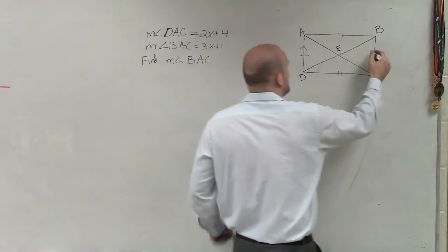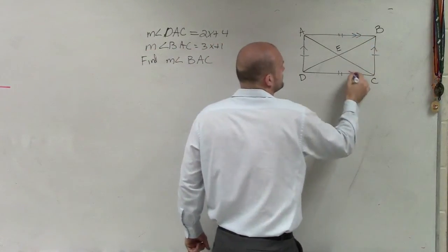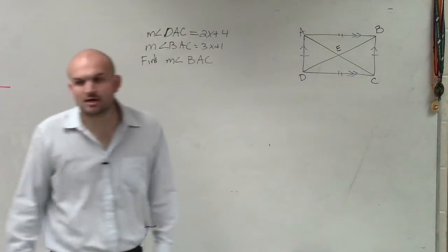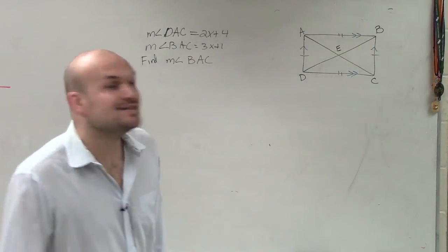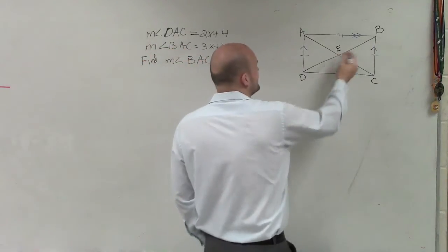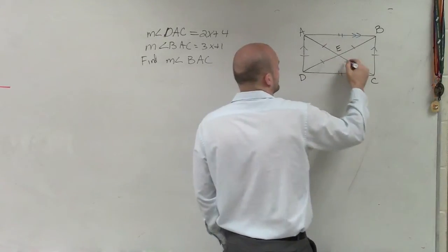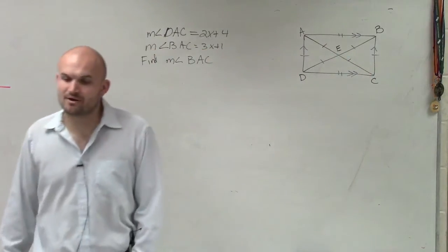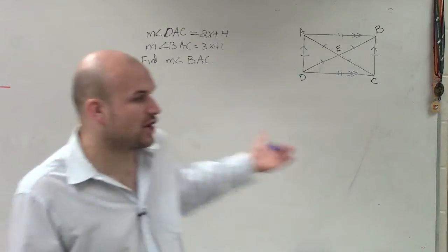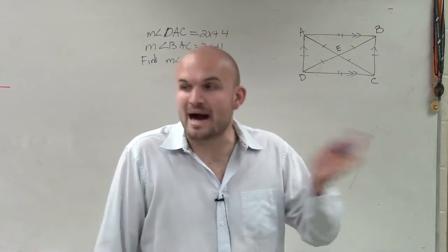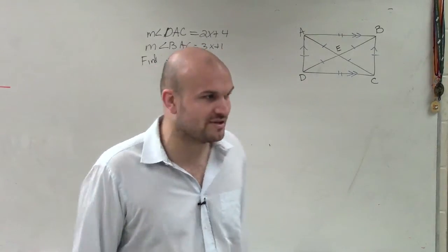We also know that opposite sides are parallel, because a rectangle is a parallelogram, right? We also know that these bisect each other. But what's also more important about a rectangle is that the diagonals are congruent, so therefore the bisectors are all congruent of each diagonal.